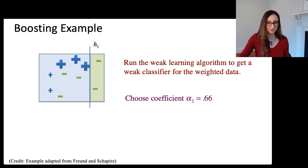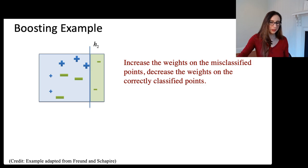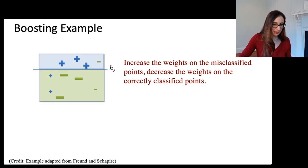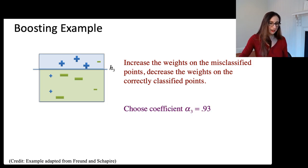Then we, again, decrease the weights on all the points we got correct, increase the weights on the incorrectly classified points, and then keep repeating this over and over until we decide we're done. Here, this classifier did really well. The only points it missed had very low weights, and so its alpha got to be really large.